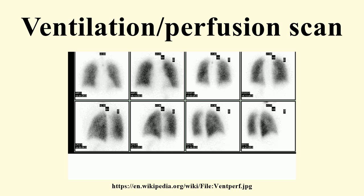SPECT is often skipped if the patient has pulmonary hypertension. It is also possible to perform the scan with positron emission tomography rather than conventional gamma camera scintigraphy. This has been performed with gallium-68-labeled carbon nanoparticles using a conventional technogas machine for ventilation images, and with gallium-68-labeled MAA for perfusion images. PET has multiple potential advantages including superior resolution, speed, and quantification.